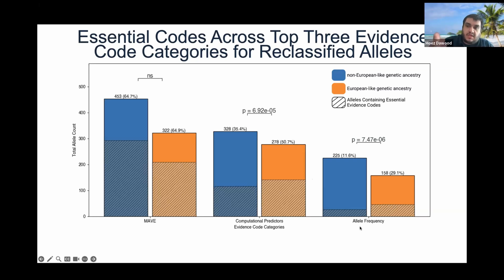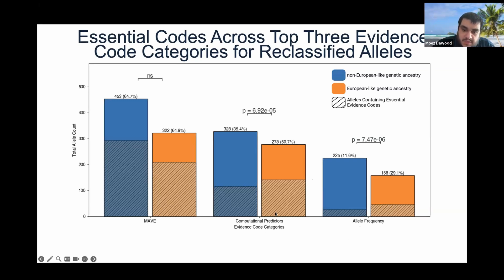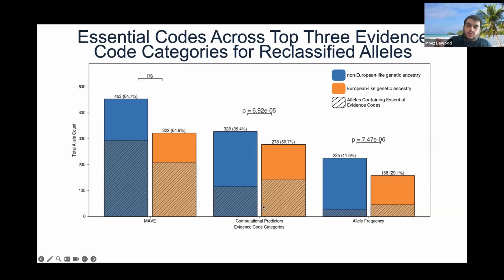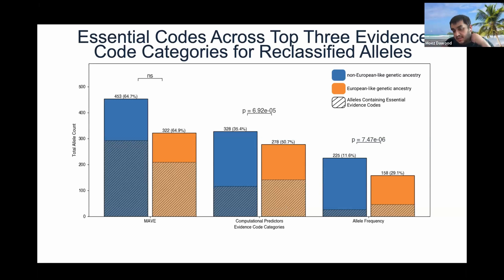However, for computational predictor codes and allele frequency evidence codes, there is a significant difference: individuals of European-like ancestry found these codes more essential in their VUS reclassification. This is another way of representing the original VUS disparity. For allele frequency, this makes sense — the majority of databases have predominantly sequenced individuals of European-like ancestry. For computational predictors, this is surprising, because they also produce saturation-level data with variant effects for every variant. What we think has happened is that predictors like REVEL and CADD were trained on population allele frequency or clinical allele data that already had inherent bias — effectively classic AI bias.